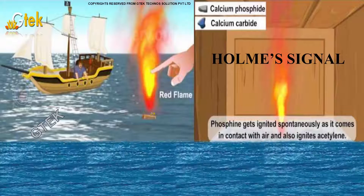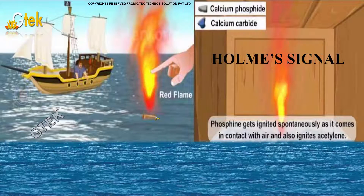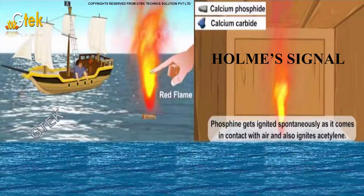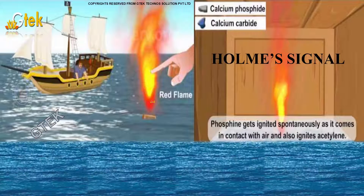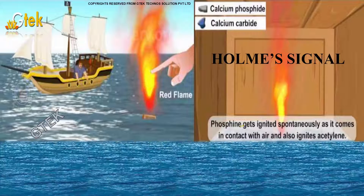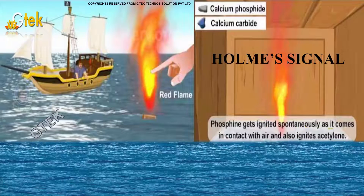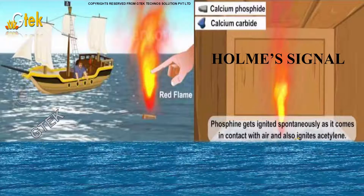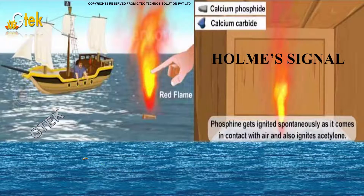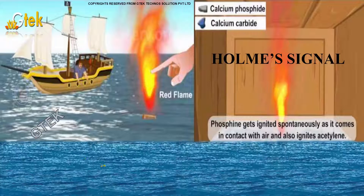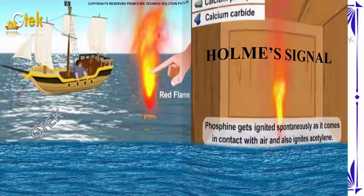Here is a typical example of Phosphine — you are able to see that when put in water, a huge flame comes out. Phosphine ignites spontaneously as it comes in contact with air and also ignites acetylene. This is called a home signal.